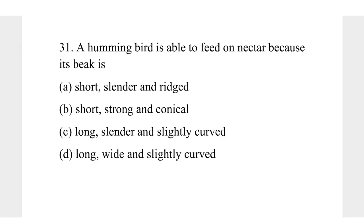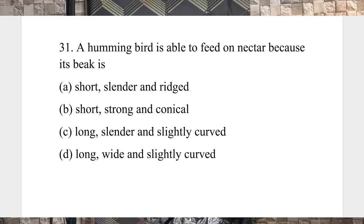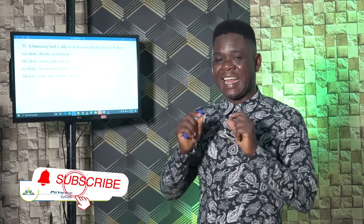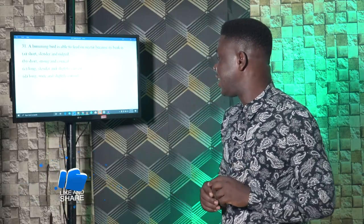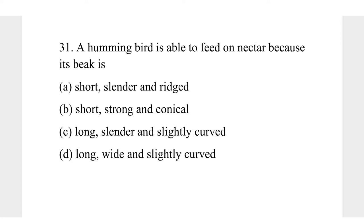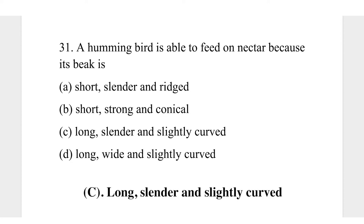Question 31. A hummingbird is able to feed on nectar because its beak is: A, short, slender, and rigid; B, short, strong, and conical; C, long, slender, and slightly curved; D, long, wide, and slightly curved. To obtain nectar from a flower you need a beak that can go inside the flower to obtain the nectar. The hummingbird will usually have a long, slender, and slightly curved beak. The correct answer is C, long, slender, and slightly curved.